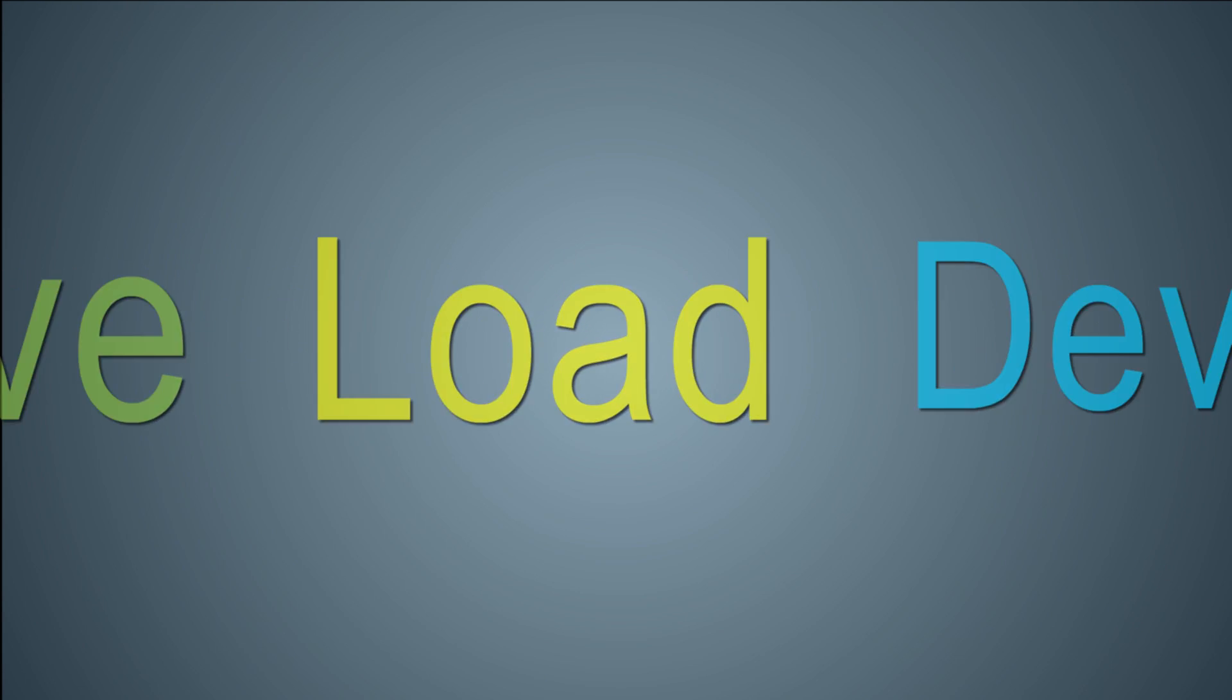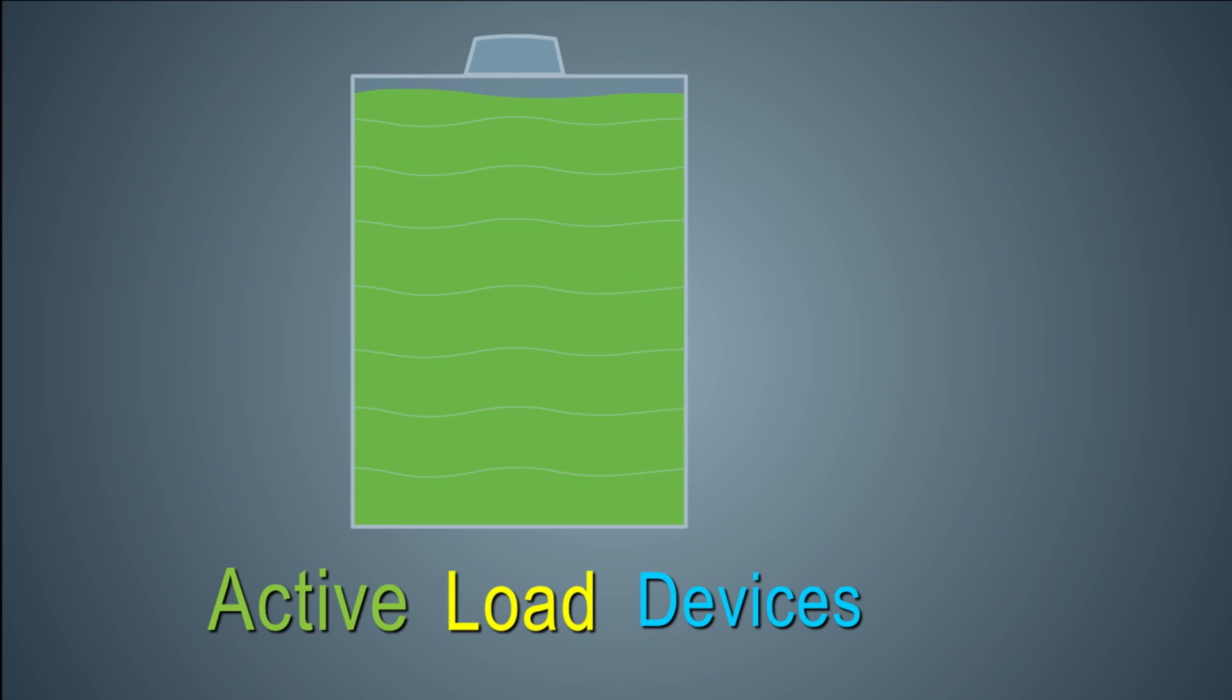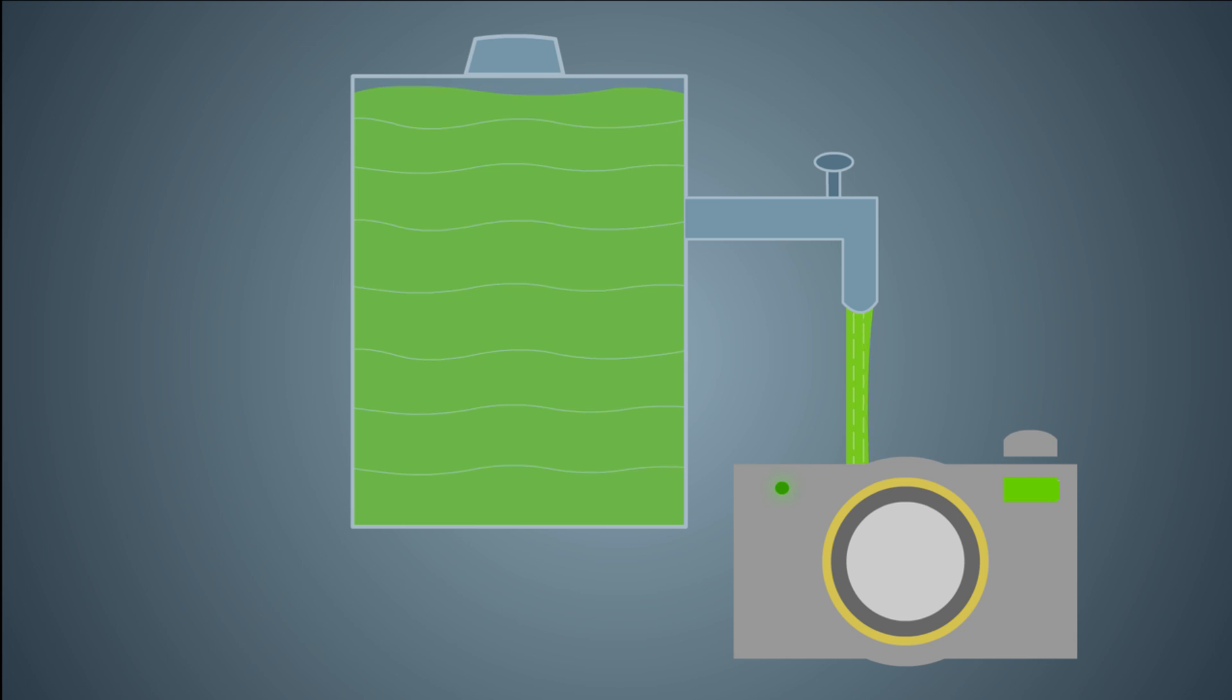Now we look at active load devices. Imagine the same container full, representing a new battery. For active load devices, there is only one large faucet on the container. The faucet in these active load devices, such as a digital camera, is located at the level called the cutoff voltage, which varies in devices.